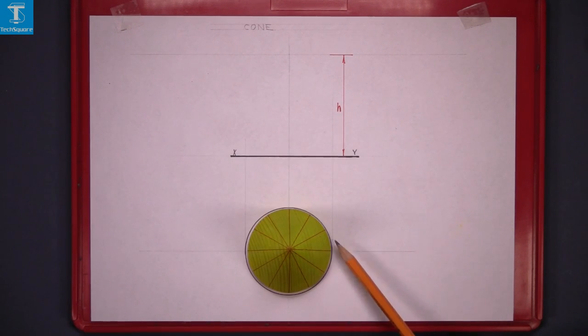I have it divided up into 12 sections here. Now to do that we use our 60 degrees set square.